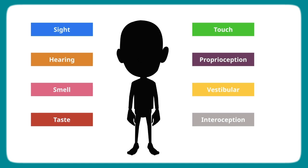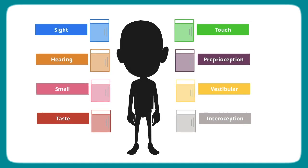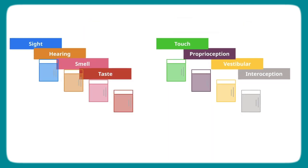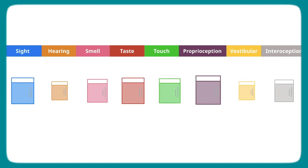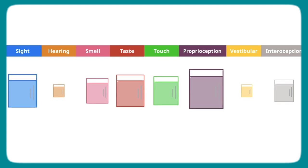But there isn't just one cup for all the sensations. Your child has different cups or thresholds for each different sensation, and these cups or thresholds can be different sizes.